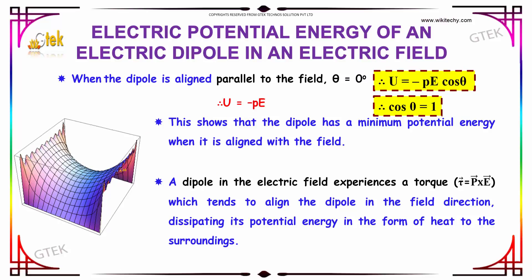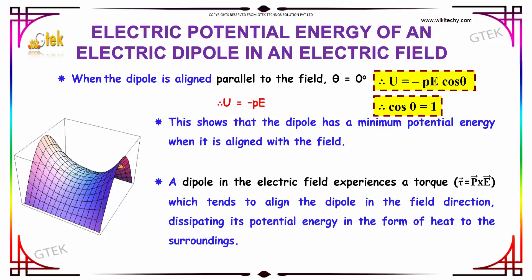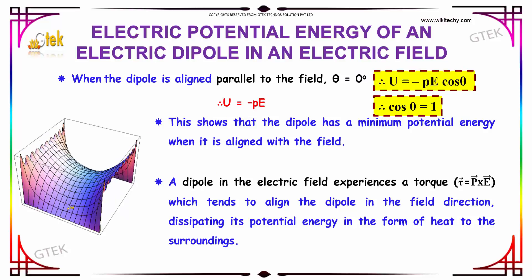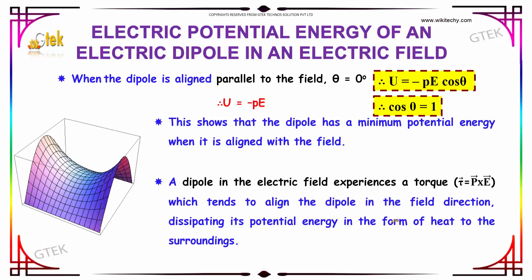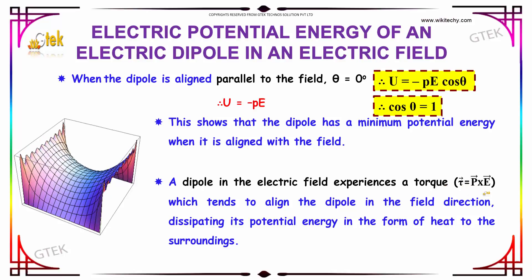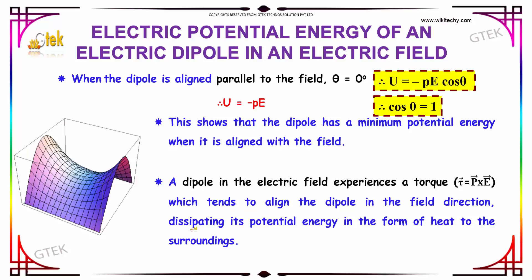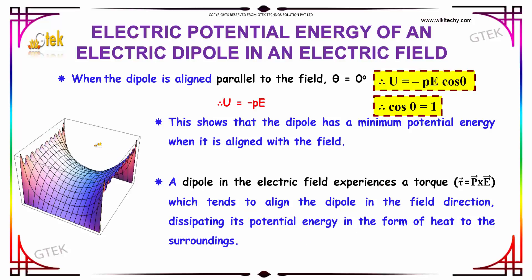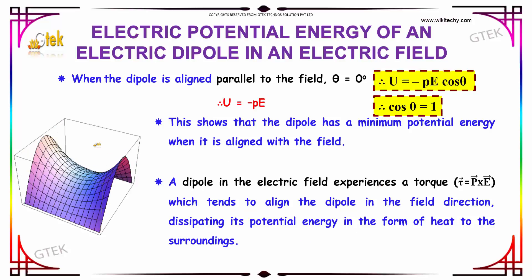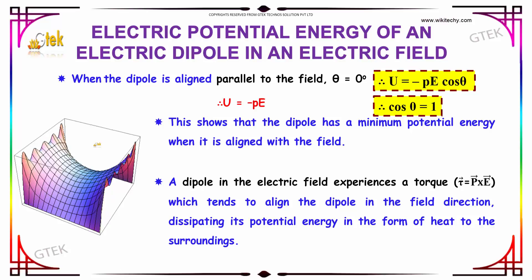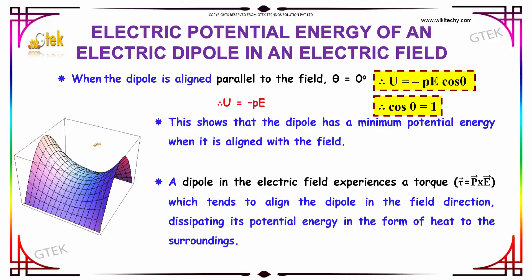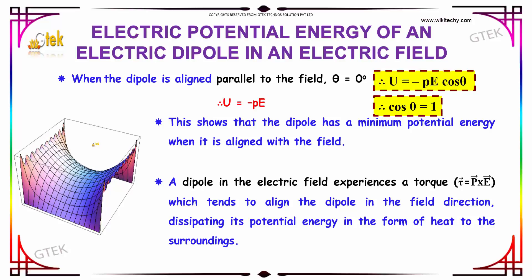A dipole in the electric field experiences a torque τ = p × E, which tends to align the dipole in the field direction, dissipating its potential energy in the form of heat to the surroundings.